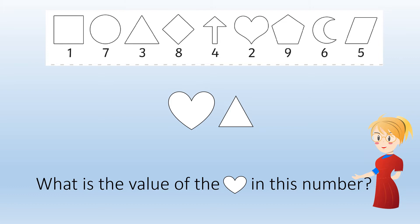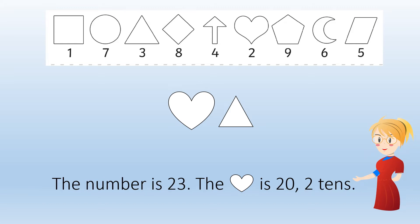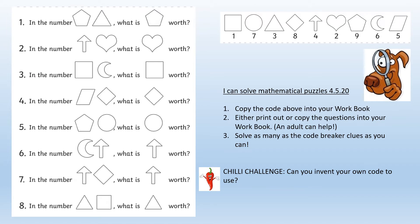If you look at this number, what is the value of the heart? The number is 23. The heart is 20, or two tens, because it is written in the tens column. For your task today you need to copy out the code into your workbook. You can then either print out or copy the questions — ask an adult to help you with this. You then need to solve as many of the code breakers as you can. For your chilli challenge today, can you try and invent your own code to use? You could set me a challenge if you would like to.